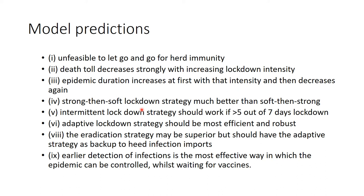An intermittent lockdown strategy may be an idea. An adaptive lockdown strategy — first strong, then relaxed as you measure the effect on the epidemic — would be most effective, efficient, and robust, both for the economy and for health. The eradication strategy may indeed be superior, but only if you have the adaptive strategy in place as a backup against future imports. Early detection of infections is the most effective measure before vaccines are available. An adaptive lockdown combined with strong emphasis on measure, measure, measure — earlier detection of infections — would be the best way to proceed.